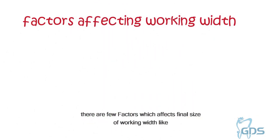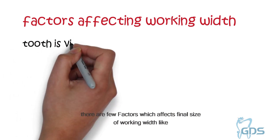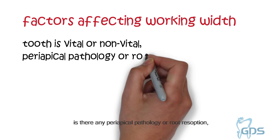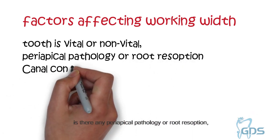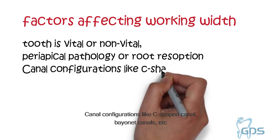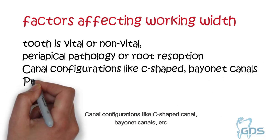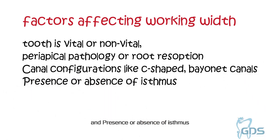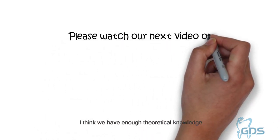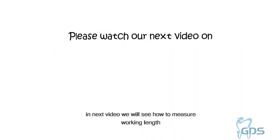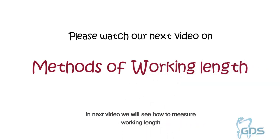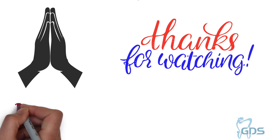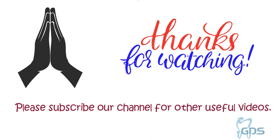There are a few factors which affect the final size of the working width, like whether the root canal is vital or non-vital, whether there is any periapical pathology or root resorption, canal configuration such as C-shaped or bayonet canal, and the presence or absence of the smear layer. I think we have enough theoretical knowledge. In the next video, we will see how to measure working length for cleaning and shaping. Thank you for watching. Please subscribe to our channel to watch other useful videos.